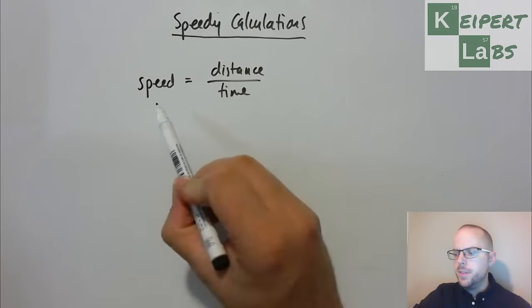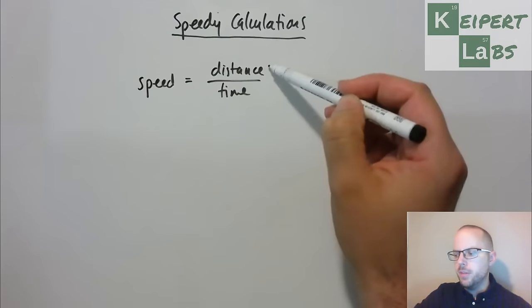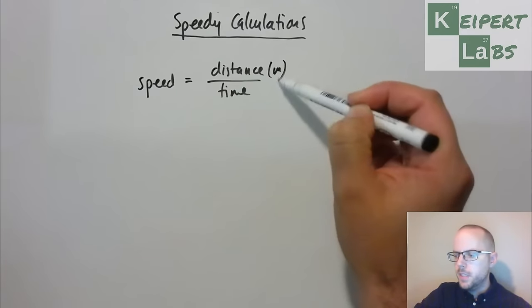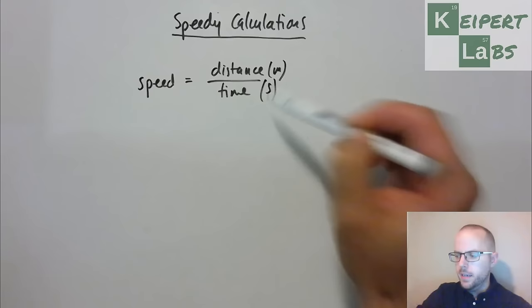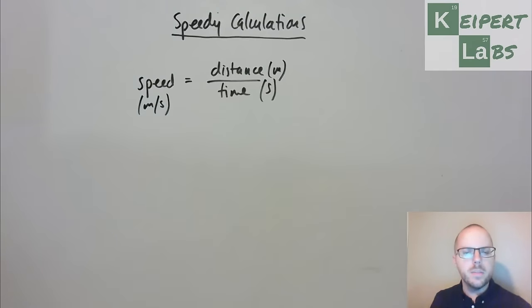So remember in the previous video we introduced this formula that an object's speed is the distance that it travels in metres, typically, over the time taken in seconds. And that gives us units of speed in metres per second.